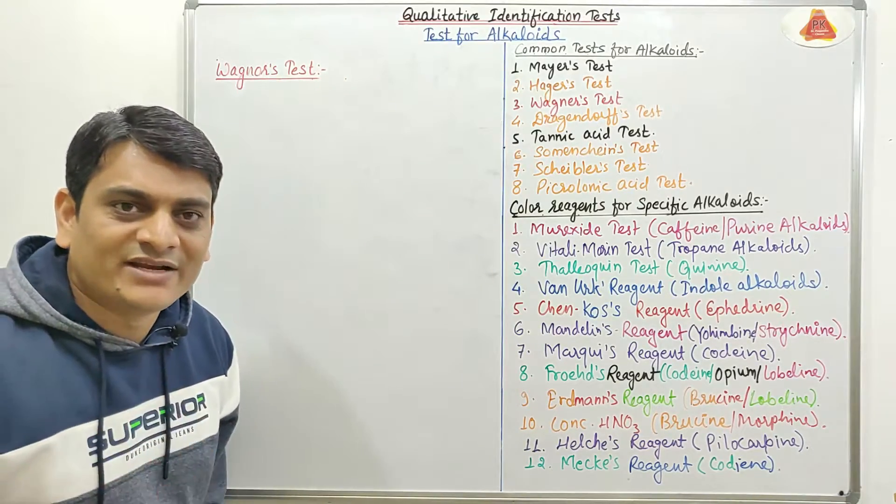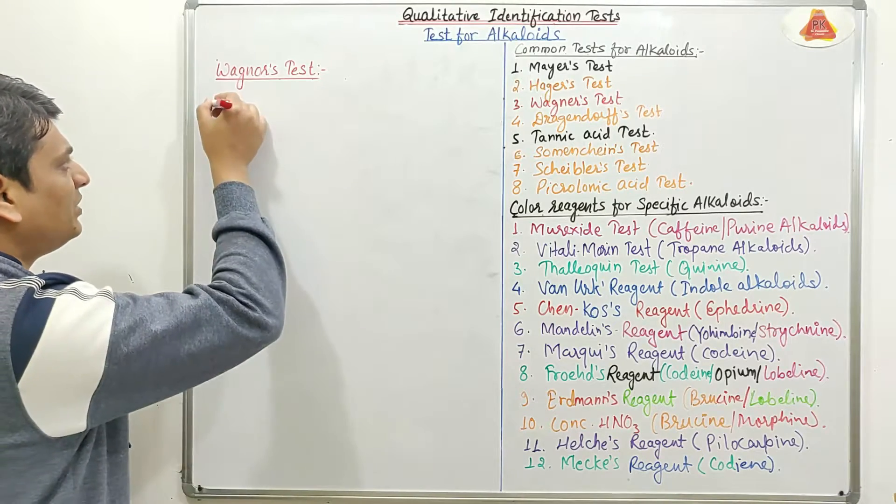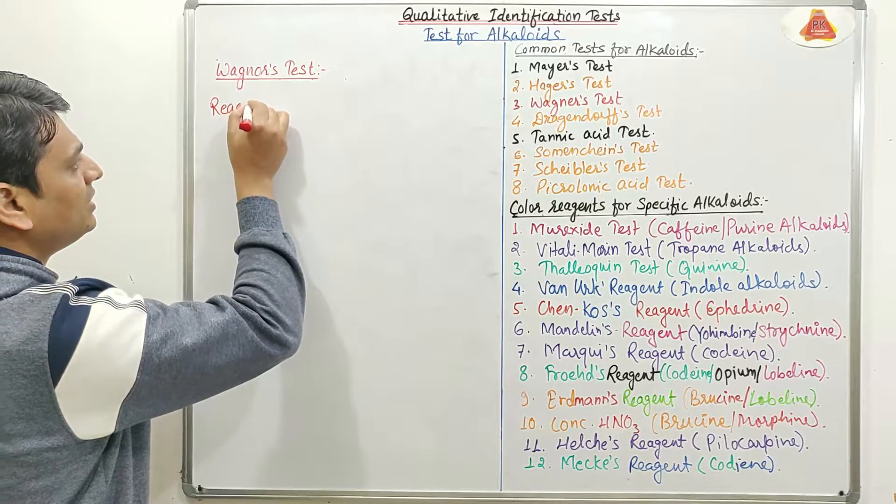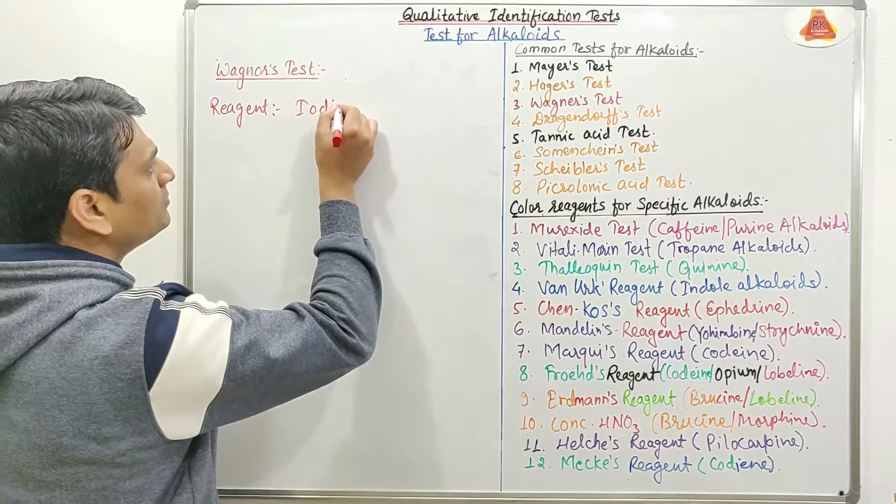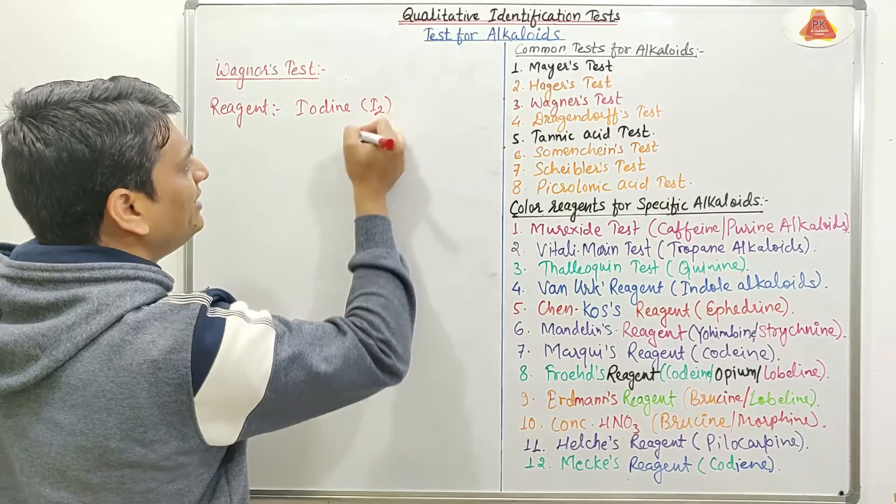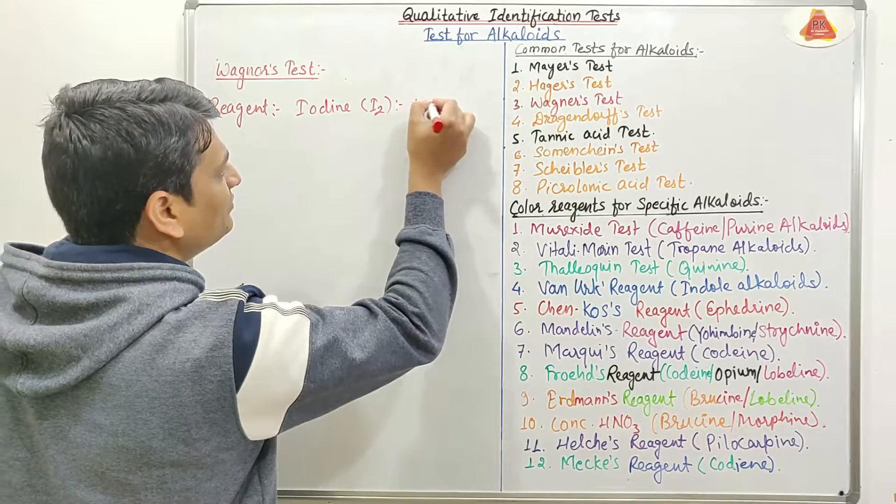So for the details about Wagner's test, first I will discuss the preparation of reagent. Wagner's reagent contains iodine, that is I2, and the amount of I2 will be 1.3 grams.